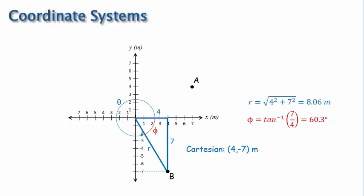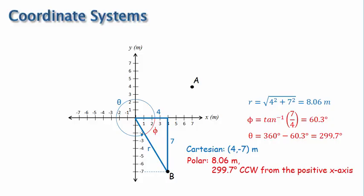So now that we have phi, we can calculate theta by recognizing that it is 360 degrees minus phi, which comes out to be 299.7 degrees. We can write the location of B in polar form now: 8.06 meters, 299.7 degrees counterclockwise from the positive x-axis.